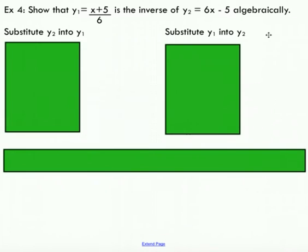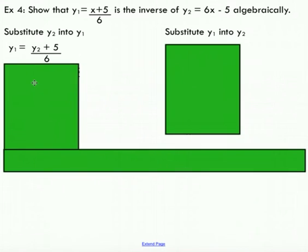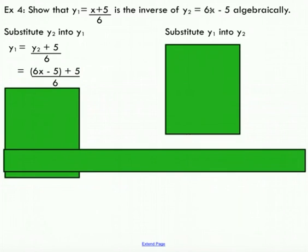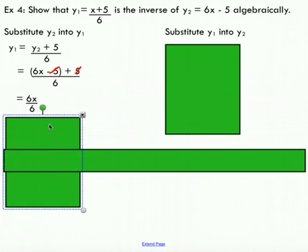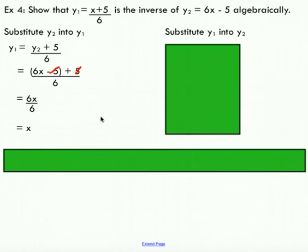The last thing I want to show is how to determine if two functions are inverses of each other algebraically. I have y1 equals x plus 5 over 6, and I want to show that this is the inverse of y2 equals 6x minus 5. What we do is take one function and substitute it into the other — we'll substitute y2 into y1, and then y1 into y2. I'll take y2, which is 6x minus 5, and substitute it in for x in y1.